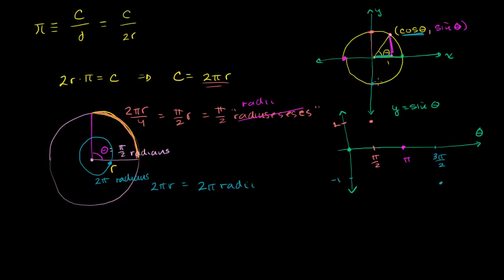Finally, when you go all the way around the circle, you've gone 2 pi radians, you're back where you began, and sine of theta, or the y-coordinate, is 0 once again. If you connect the dots or plot more points, you would see a sine curve over this region.